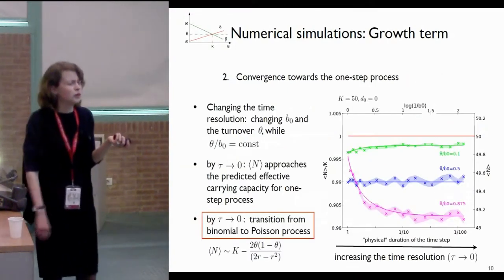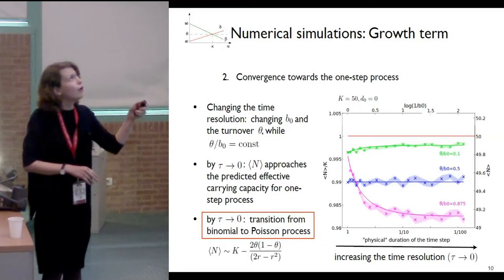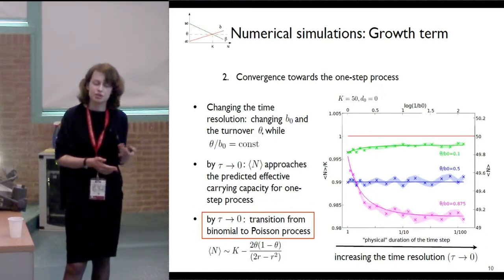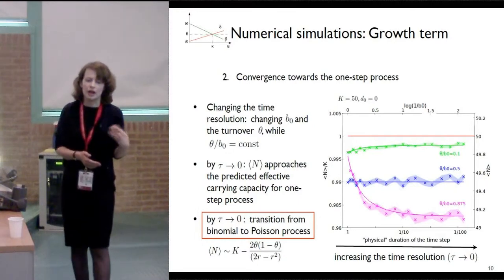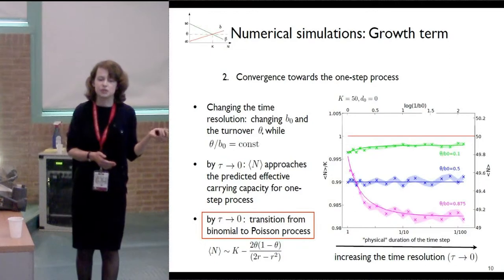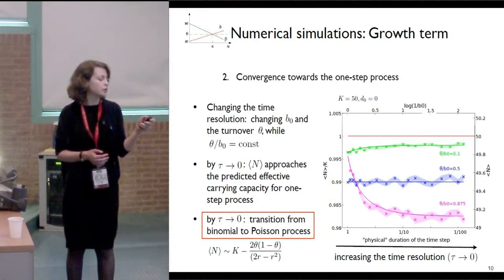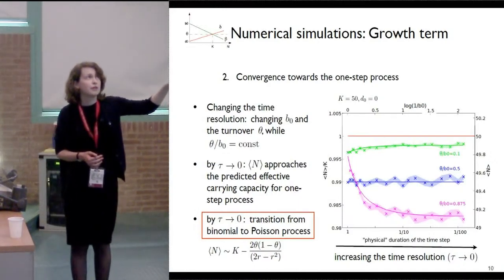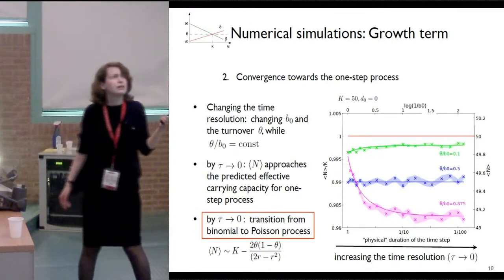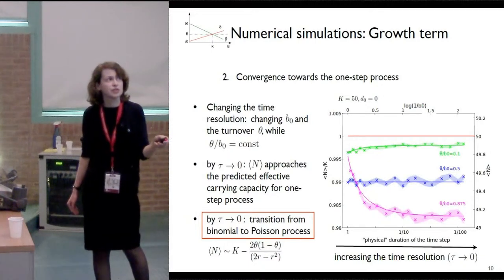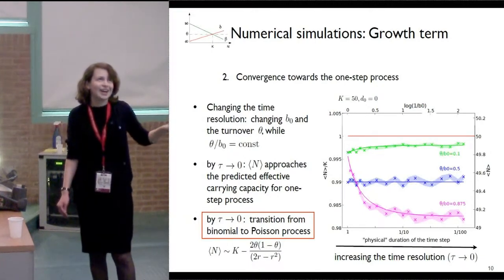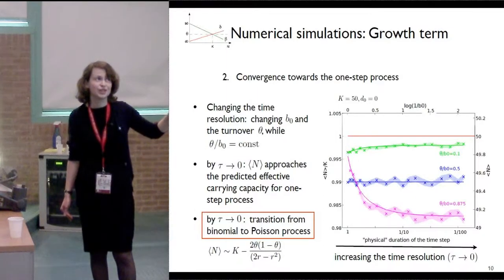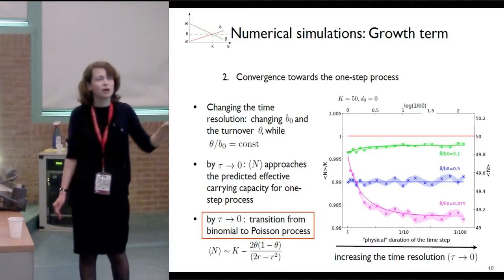Another important point for the model of growth is the convergence towards the one-step process. We would like to see if by changing the time resolution we can let our model approach the standard one-step continuous time process. To do so we change b0 and D0 by taking the ratio of a constant. On this plot we have again the normalized effective carrying capacity, and on the x-axis we have the physical direction of the time step. In this region we have a large time step with many events per time step — a binomial process with low time resolution — and in this region we have a smaller time step with fewer events and larger time resolution.